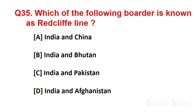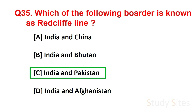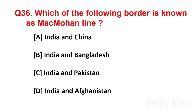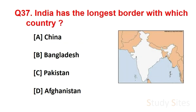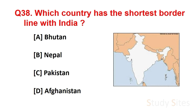Question number 35. Which of the following border is known as the Radcliffe Line? Answer is India and Pakistan border. Question number 36. Which of the following border is known as the McMahon Line? Answer is India and China border. Question number 37. India has the longest border with which country? Answer is Bangladesh. Question number 38. Which country has the shortest border line with India? Answer is Afghanistan.